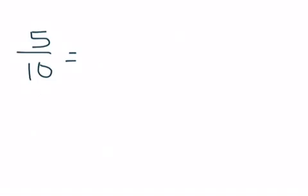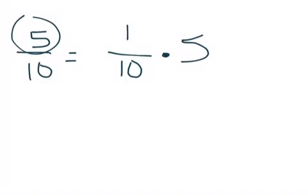Five tenths. I look at the denominator, and I know it's ten, so my unit fraction is one tenth. I'm going to multiply that by how many pieces there are. There are five pieces. One tenth times five.